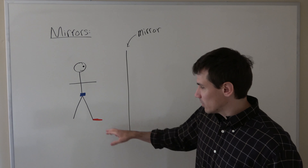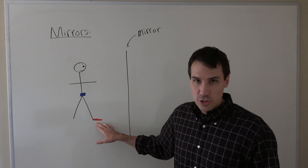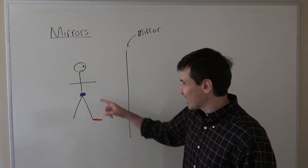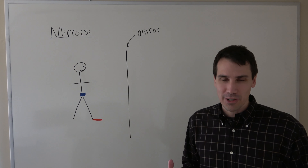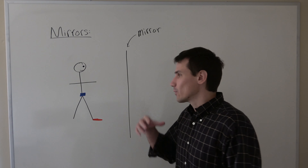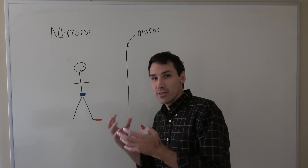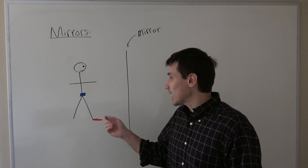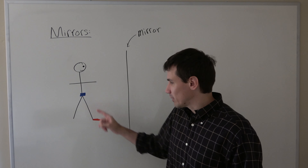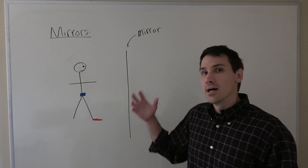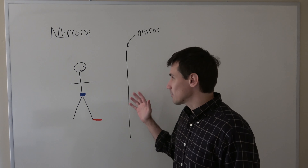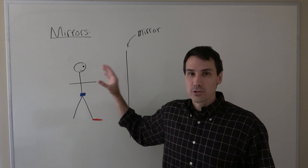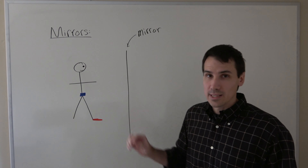We're going to imagine that you're wearing some bright red shoes — or at least one bright red shoe — and a big blue belt buckle. We're going to think about how the light from your blue belt buckle and your red shoes are reflected by the mirror and where they appear to be when you look in the mirror.